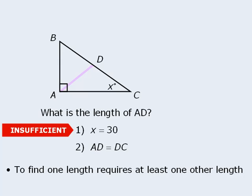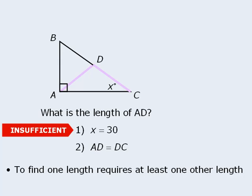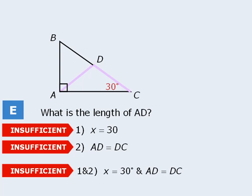Statement 2 does not provide any lengths either. It tells us that sides AD and DC have the same length, but we are not told what that length is. As such, we can take our diagram and make it larger and smaller while still maintaining equal lengths for sides AD and DC. Since statement 2 does not force side AD into having just one length, it is not sufficient. Even when we combine the two statements, we still do not know any of the lengths in the diagram. There is no way to determine the length of side AD, so statements 1 and 2 combined are not sufficient. The answer is E.